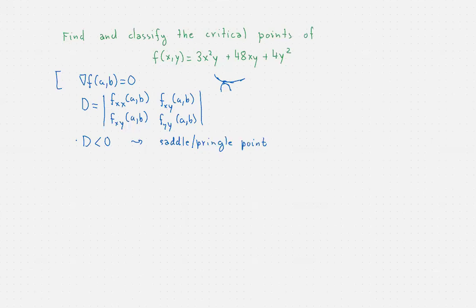If D is greater than zero, then there are two cases. Either f_xx at (a,b) is positive - positive is the shape of a smile, which implies a local minimum.